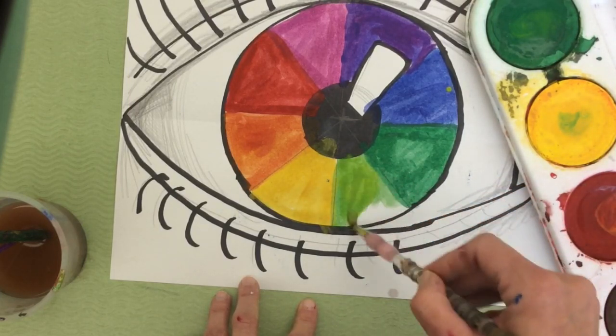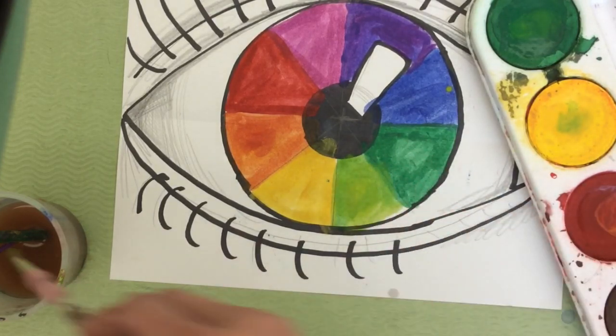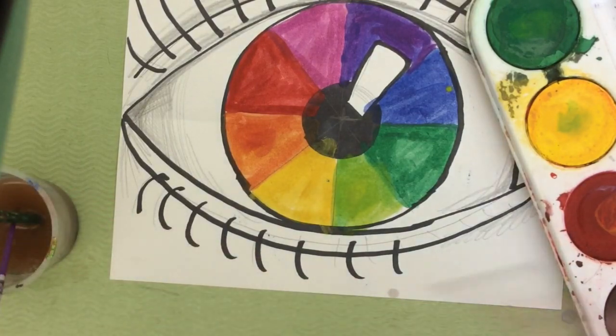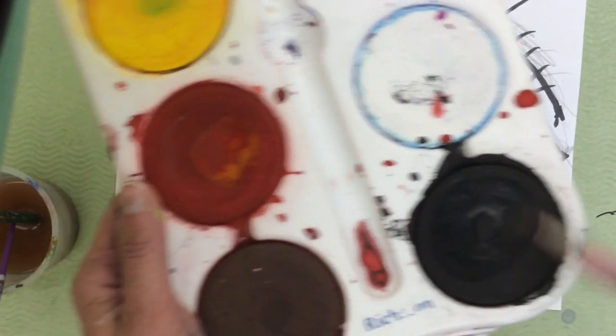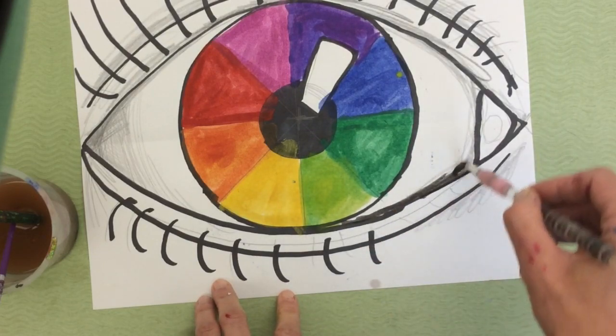Now once my eye is completely filled in and I have the primary colors, you need to have red, yellow, and blue. You need to have the three secondary colors, and then you even have room for two tertiary colors, or intermediate colors.